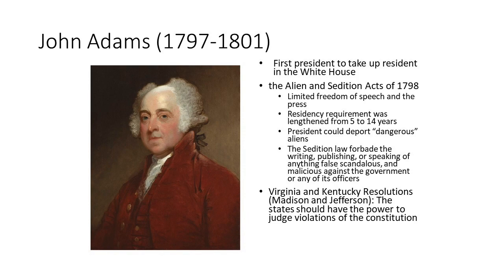Democratic-Republican journalists — people that sided with Jefferson — were arrested. The question back then was: when something is unconstitutional, which the Alien and Sedition Acts clearly were, who gets to decide? Is it the Supreme Court? Is it Congress? Or is it the states? That wasn't very clear, and it's kind of interesting that they didn't put that in the Constitution.